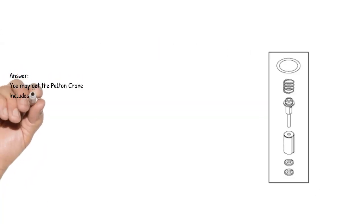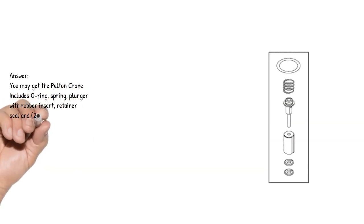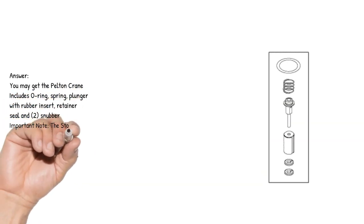You may get the Pelton Crane kit which includes O-ring, spring, plunger with rubber insert, retainer seal, and two snubbers. Important note: